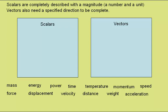For instance, 15 kg is a scalar. Vectors need a magnitude with a unit, but also need a specified direction to be complete. For instance, 7 newtons to the right would be a vector.